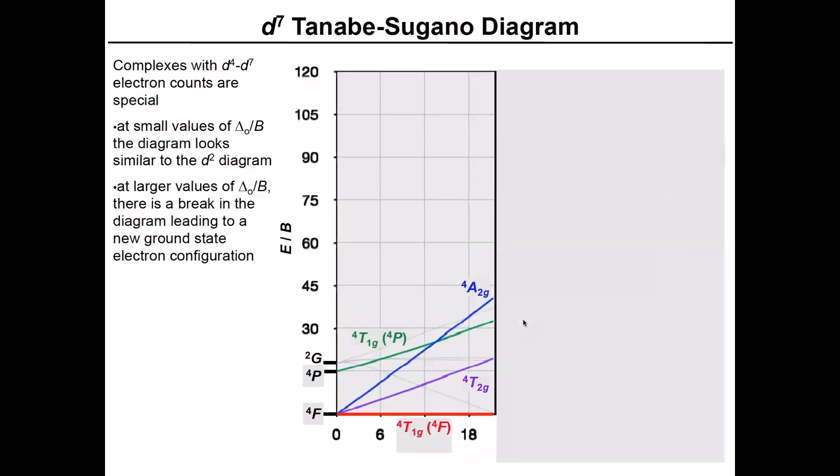Let's look at a different diagram. So if you now look at the D⁷ Tanabe-Sugano diagram, remember this is the place where we can have high spin compounds and low spin compounds.